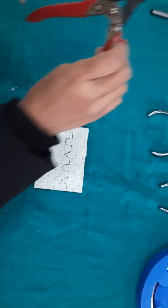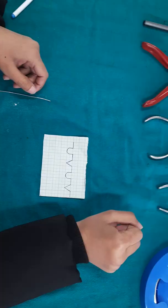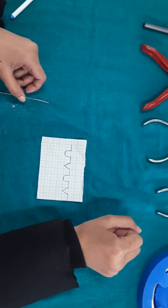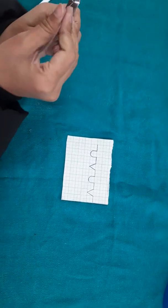Now we will cut an appropriate length wire using a wire cutter. Now the wire has to be straightened using the plier.